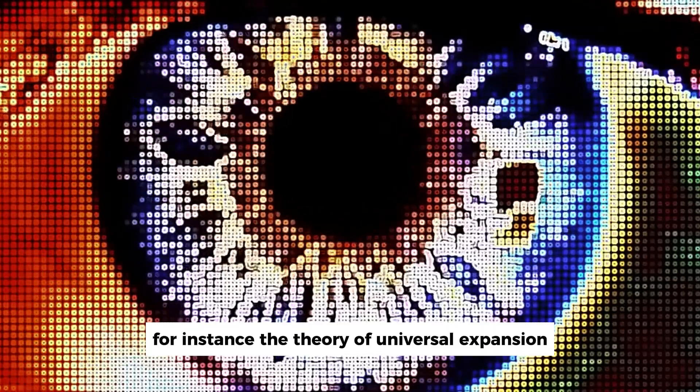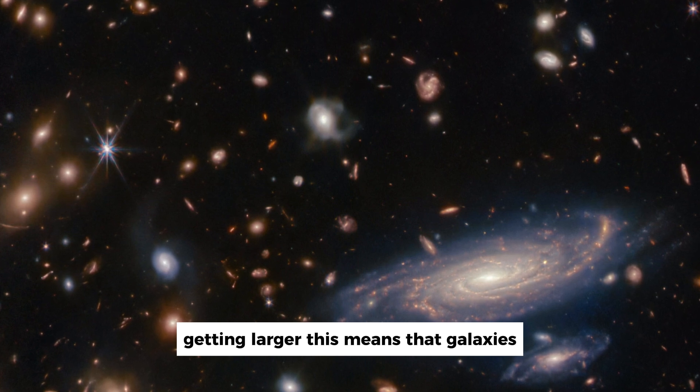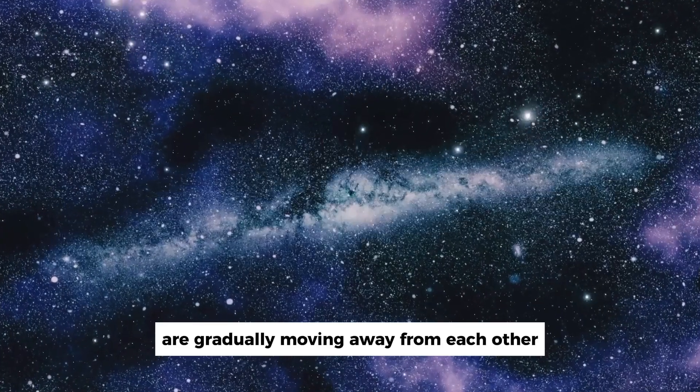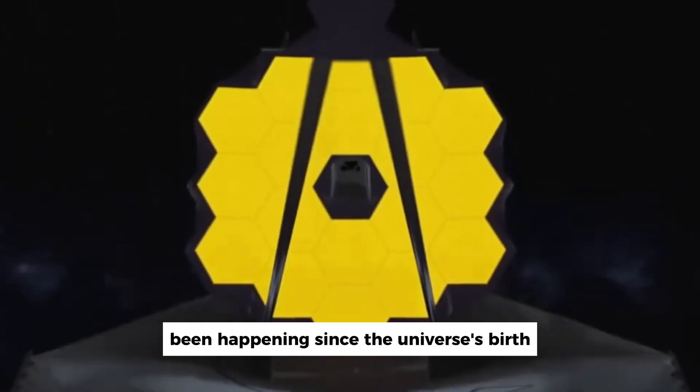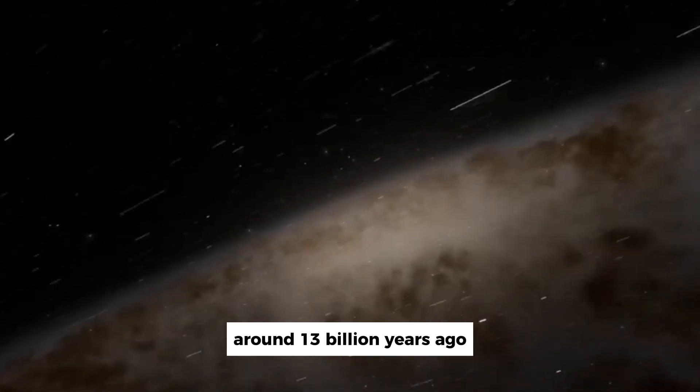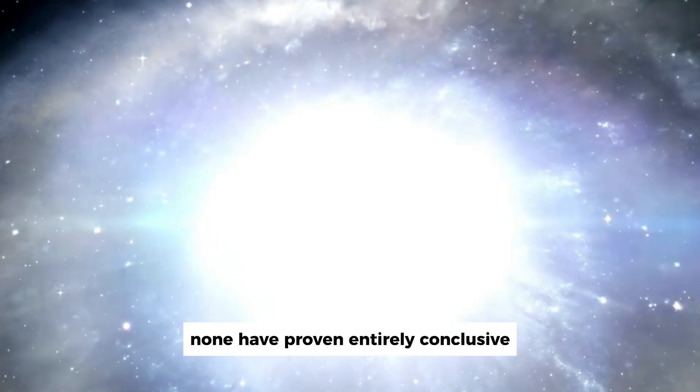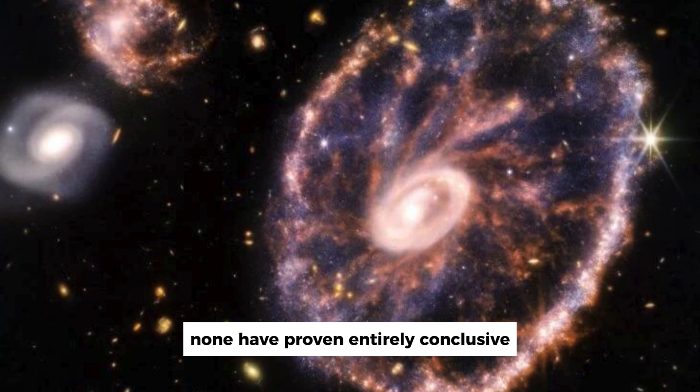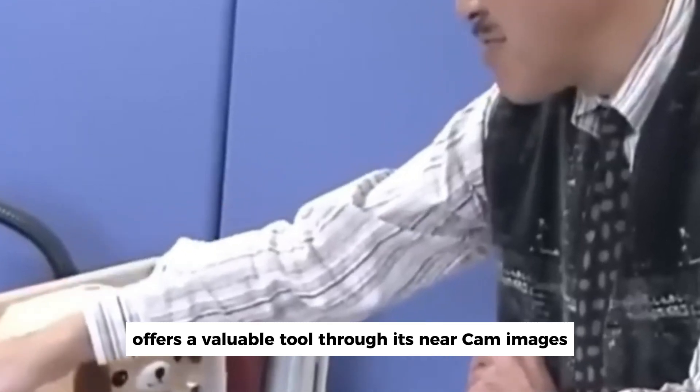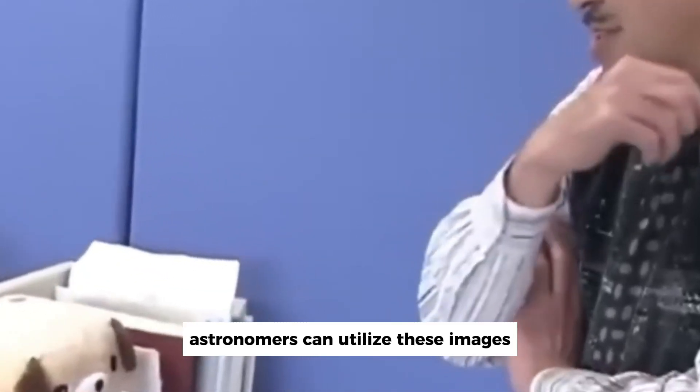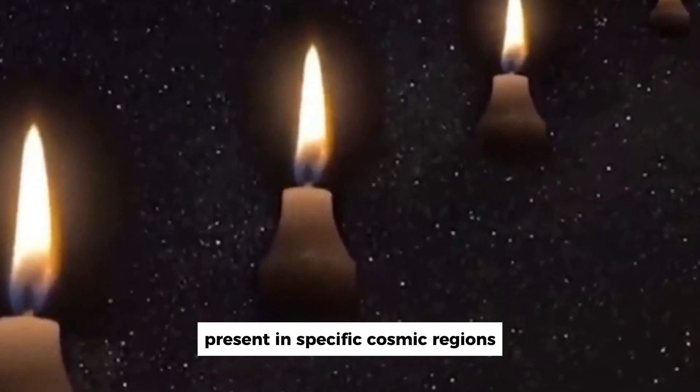For instance, the theory of universal expansion suggests that the universe is continually getting larger. This means that galaxies and galaxy clusters are gradually moving away from each other. This expansion has supposedly been happening since the universe's birth around 13 billion years ago. Although various methods have been developed to measure or detect dark matter, none have proven entirely conclusive. The James Webb Space Telescope, however, offers a valuable tool. Through its near-cam images, astronomers can utilize these images to calculate the amount of dark matter present in specific cosmic regions.